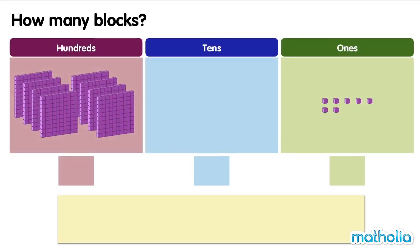How many blocks? Let's count the blocks in each place. There are 8 hundreds, 0 tens, and 7 ones. To find the total number of blocks, let's add the place values of each digit.